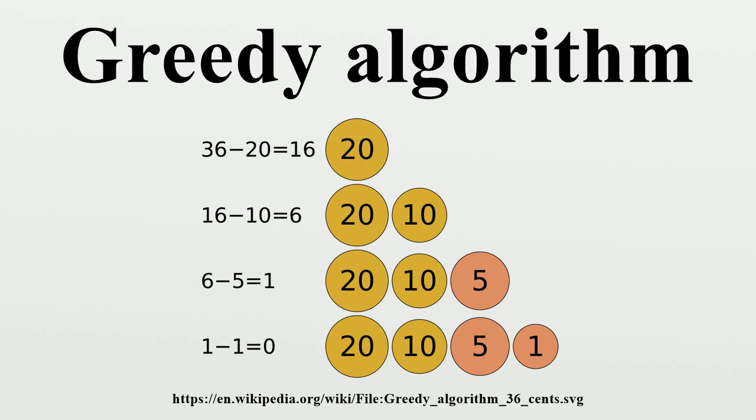A greedy algorithm is used to construct a Huffman tree during Huffman coding where it finds an optimal solution. In decision tree learning, greedy algorithms are commonly used, however they are not guaranteed to find the optimal solution.